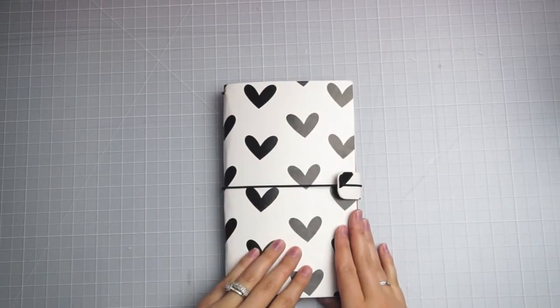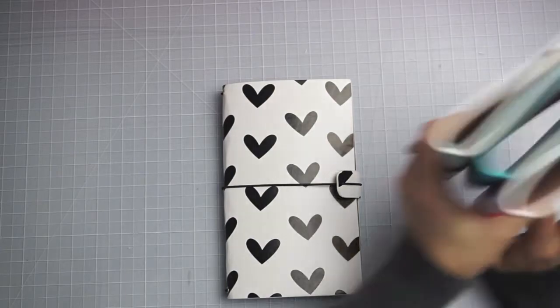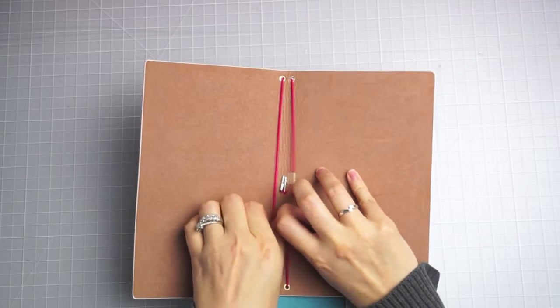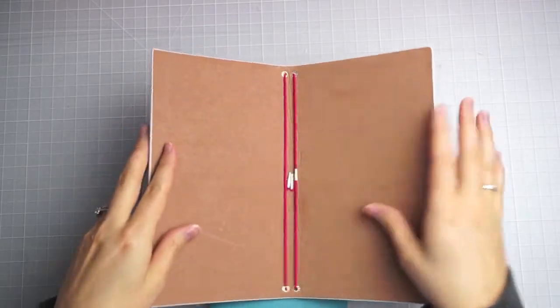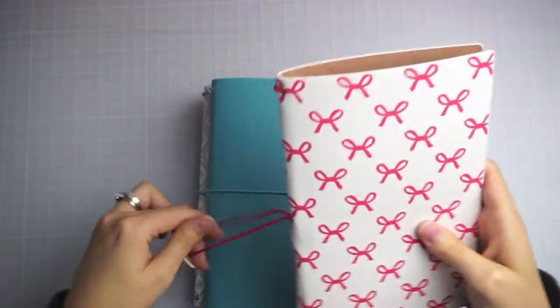This is one of the new Freckled Fawn notebooks. I do have all four of the sleek ones here. These are now shipping and they all have the two elastics and no pockets on the front. There is a pocket version, it will be shipping very soon.